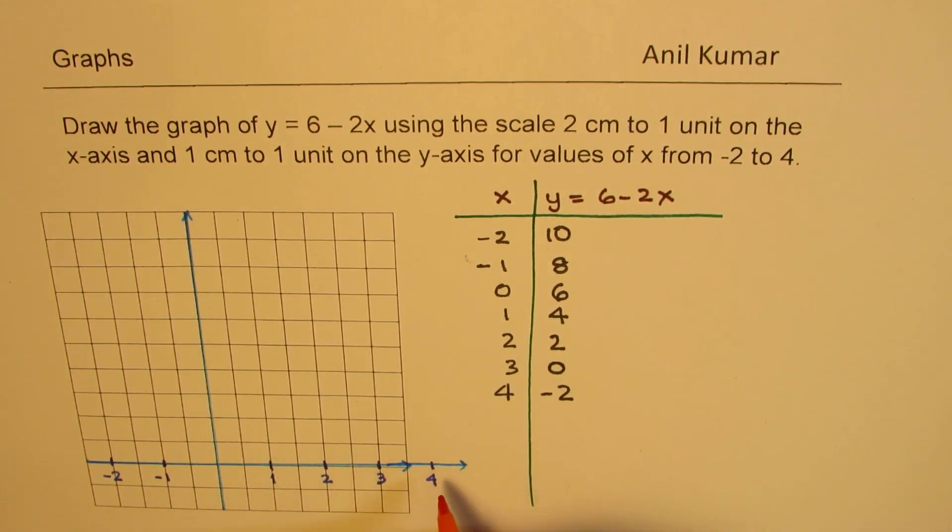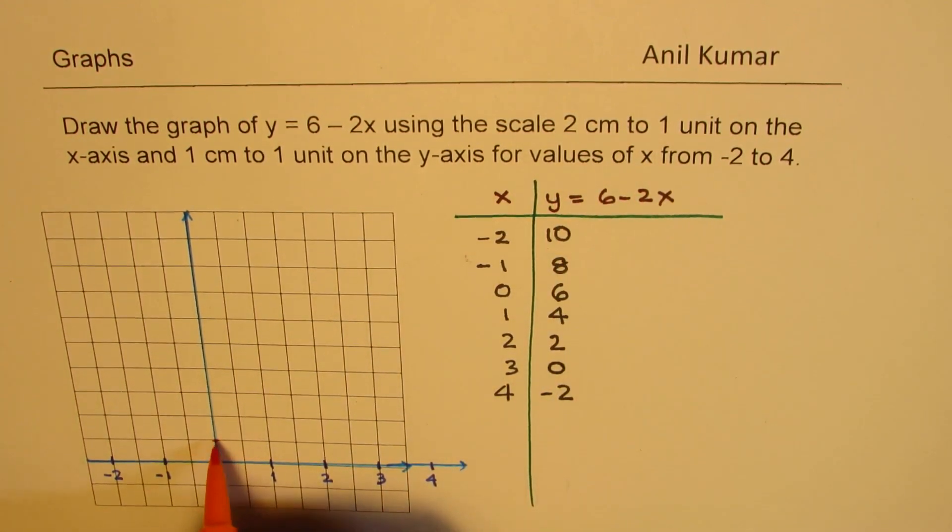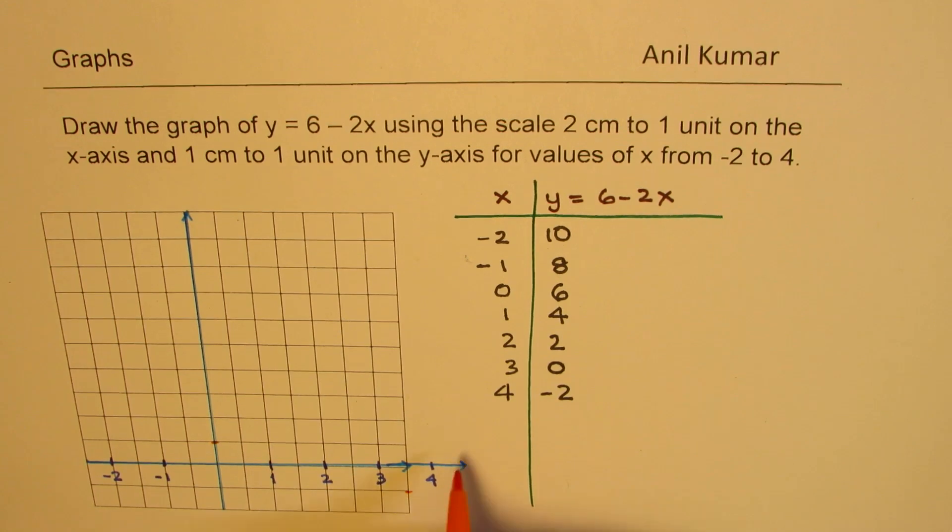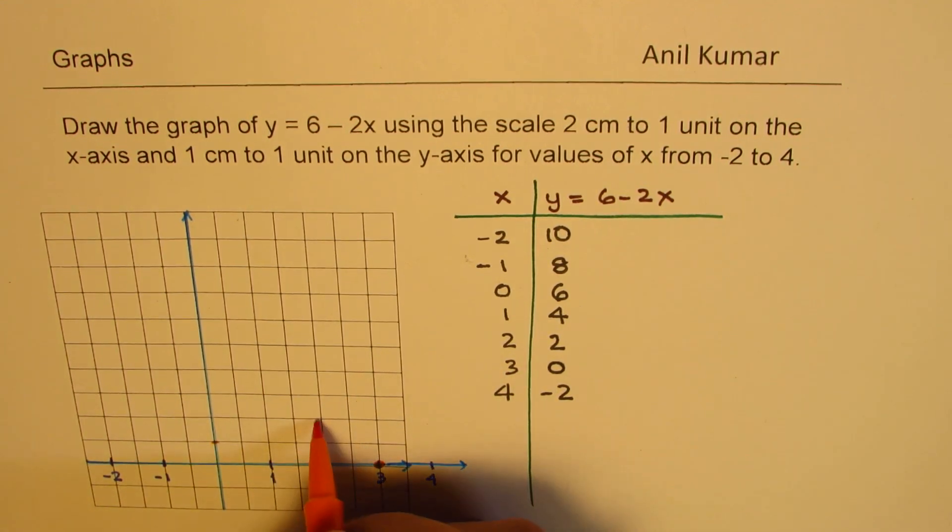At 4, it is minus 2. On the y-scale, we are using 1 unit, right? So each is 1 unit. So minus 2 will be somewhere there. At 3, it is 0. At 2, it is 2. So it is 2.